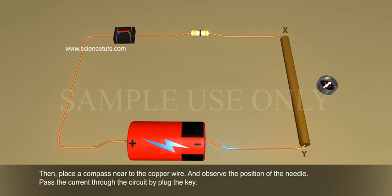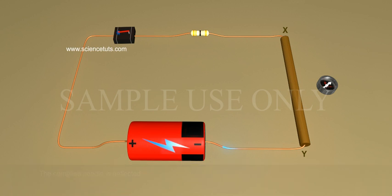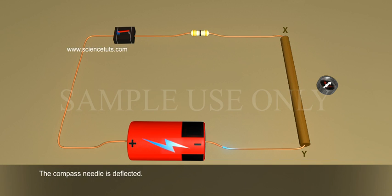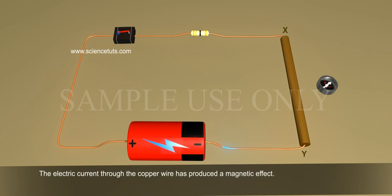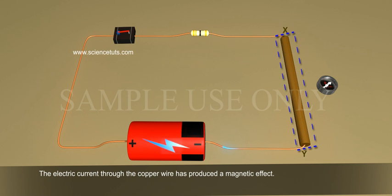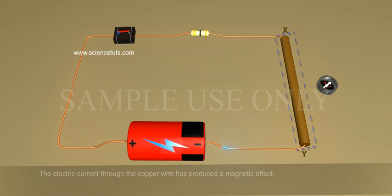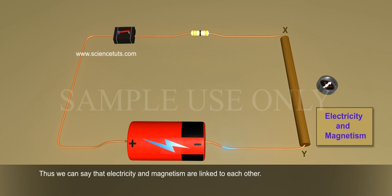What do you observe? The compass needle is deflected. Why is it deflected? The electric current through the copper wire has produced a magnetic effect. Thus, we can say that electricity and magnetism are linked to each other.